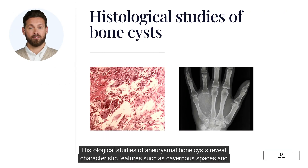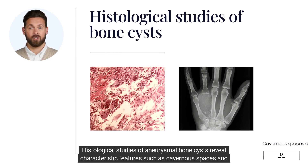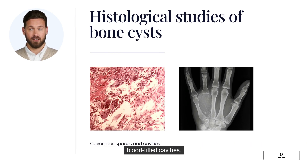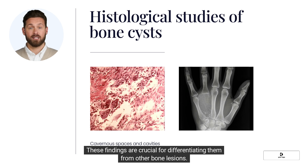Histological studies of aneurysmal bone cysts reveal characteristic features such as cavernous spaces and blood-filled cavities. These findings are crucial for differentiating them from other bone lesions.